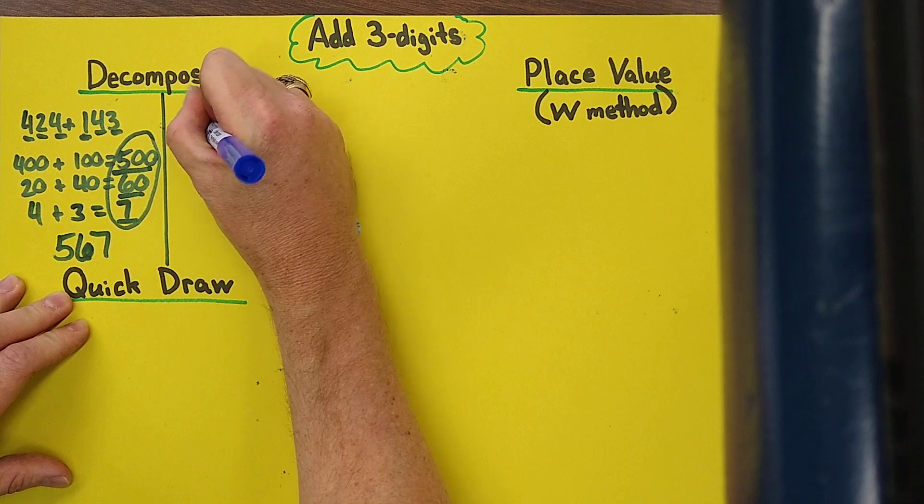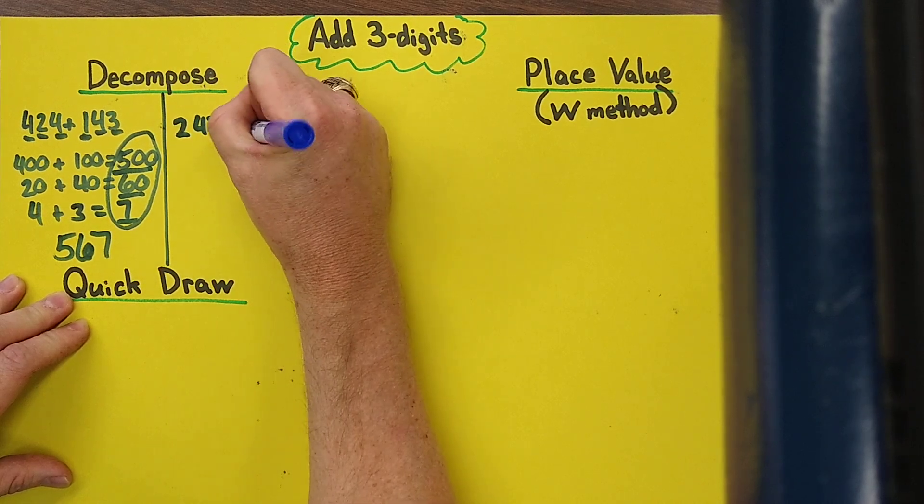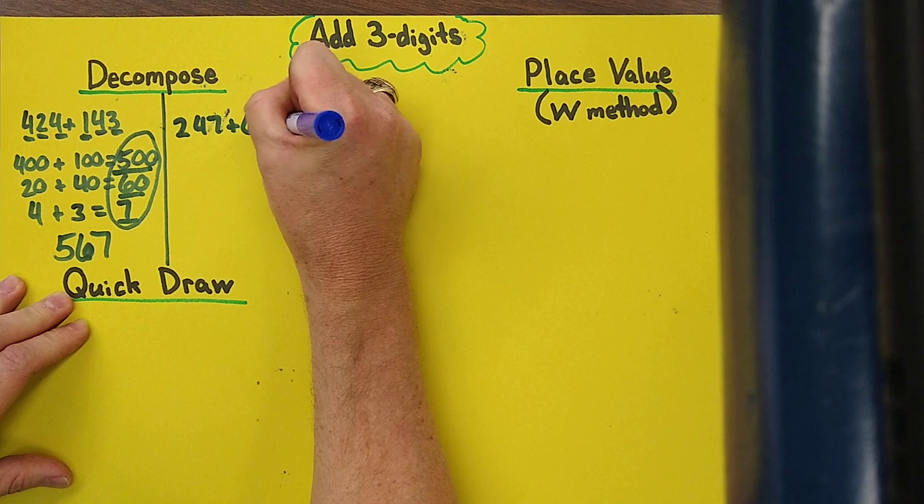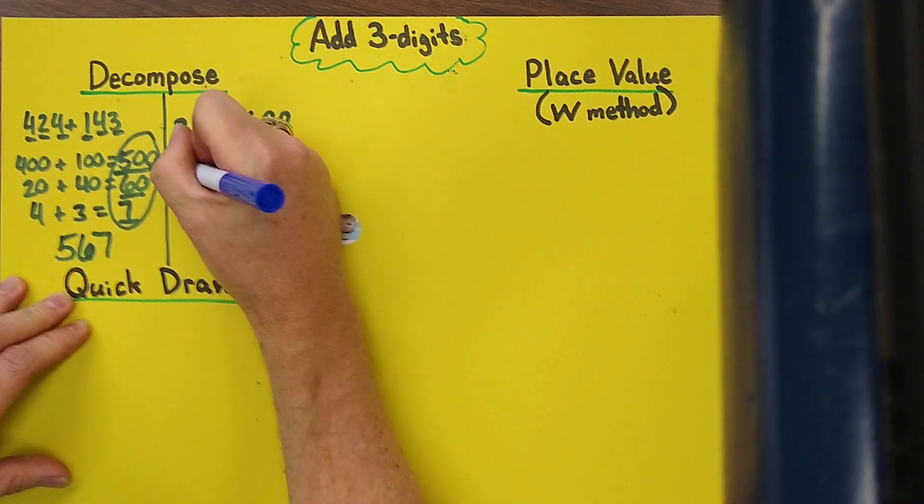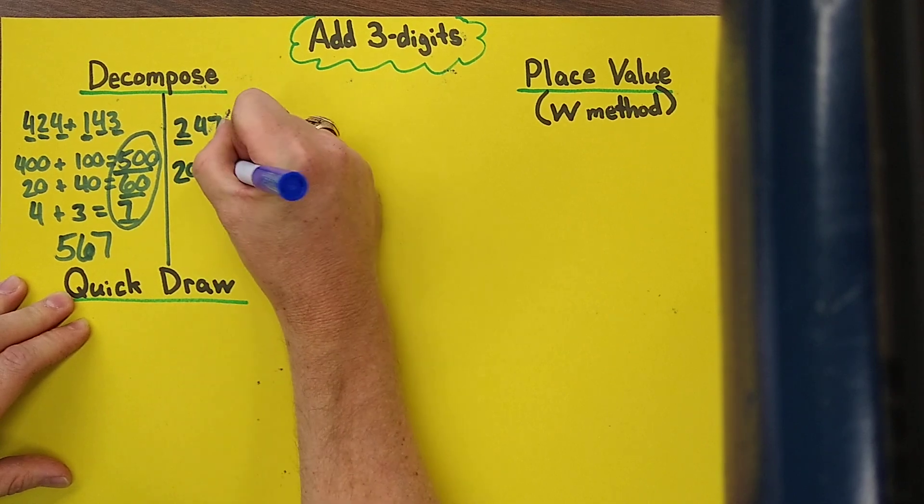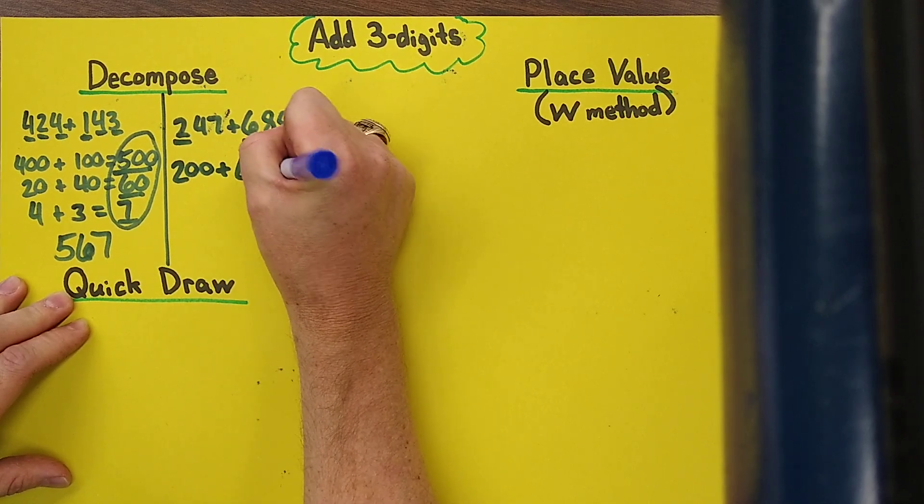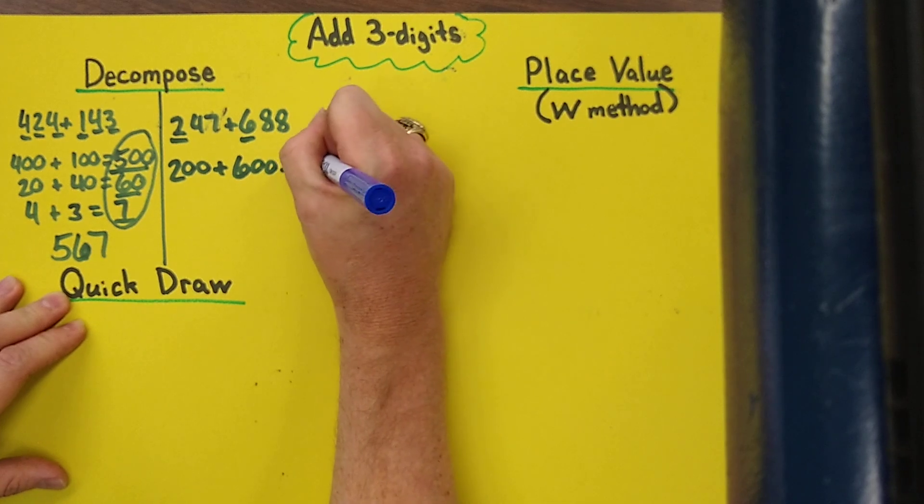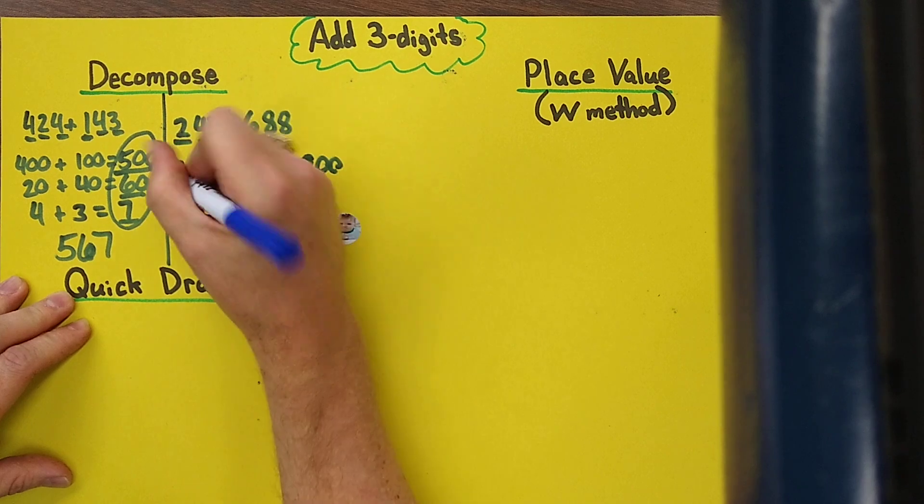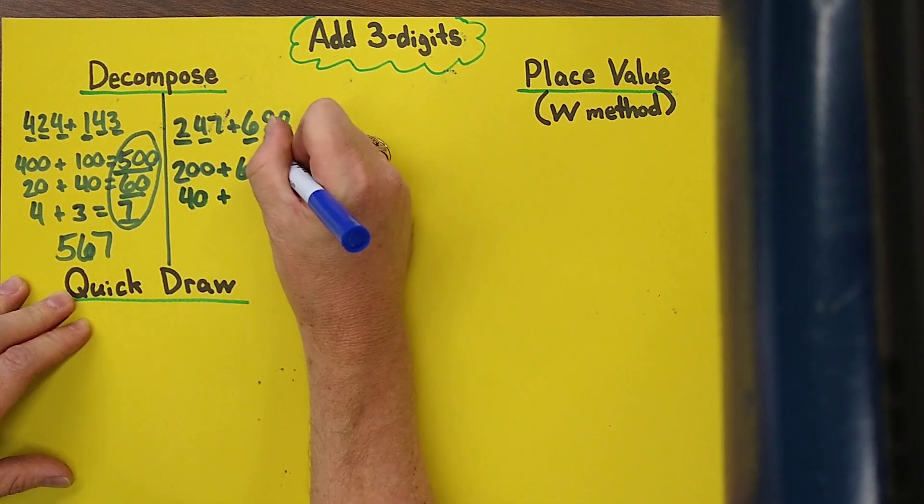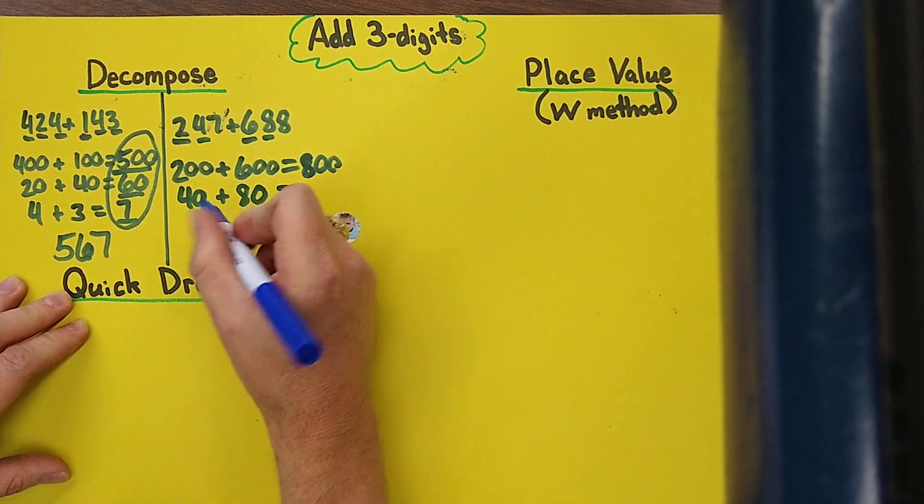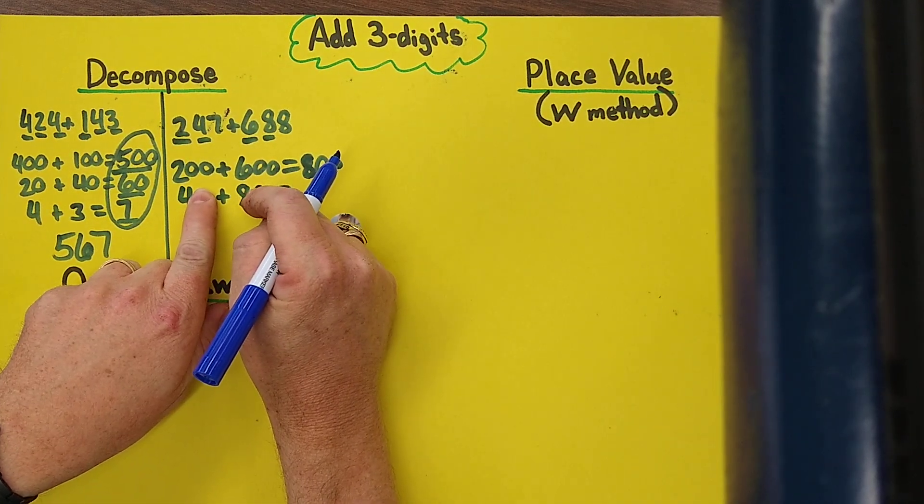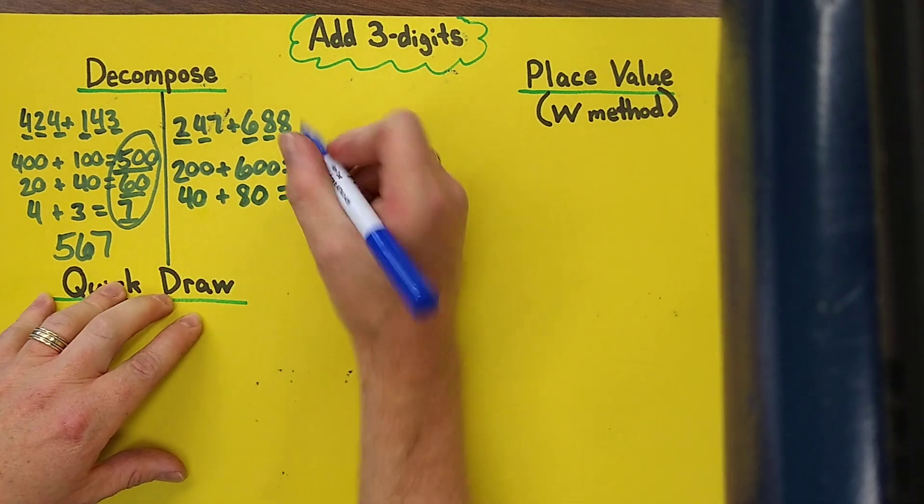So let's try one now where we have to regroup. Now on this one we're going to add our hundreds values: 200 plus 600 gives us 800. Let's add our tens digits, the values 40 and 80, so we're getting to pretty big numbers here. Just cover up the zeros and use your basic fact: 8 plus 4 is 12.